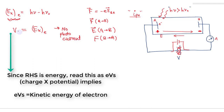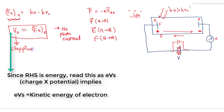That particular potential at which photo current becomes zero is known as the stopping potential, denoted Vs. This stopping potential equals the maximum kinetic energy of the emitted electrons. When the applied potential equals the maximum kinetic energy of the electron, there is no emission of photoelectrons and no photo current in the circuit.